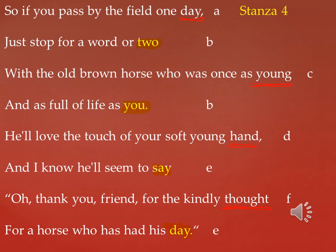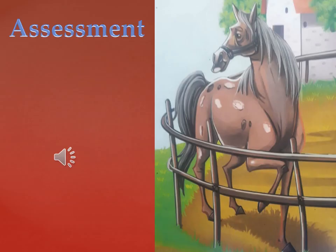Now let us see what is the rhyming scheme of this stanza. The rhyming scheme of the fourth stanza is: odd lines rhyme, which is A B C B D E E F E. Dear students, hope you have understood the poem. Now it is your turn to answer the worksheets which are sent to you along with this video presentation.